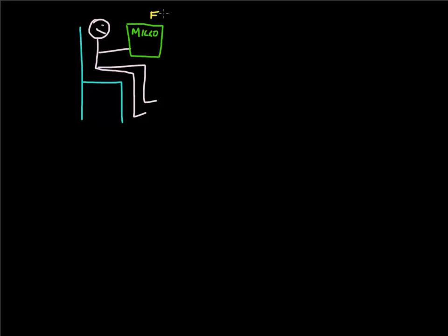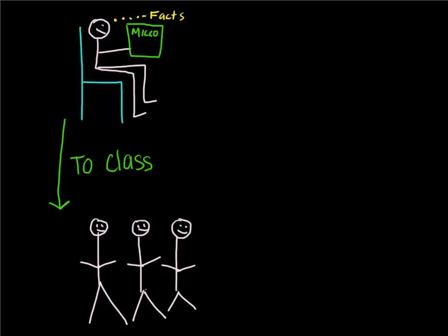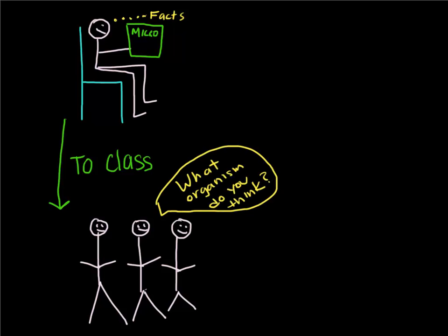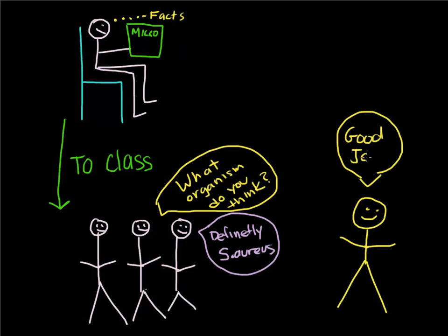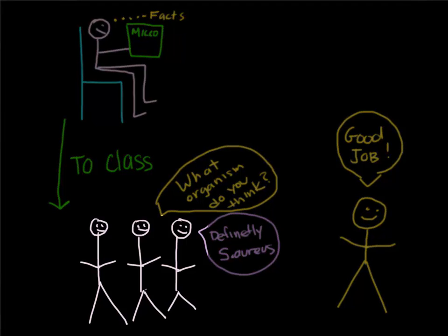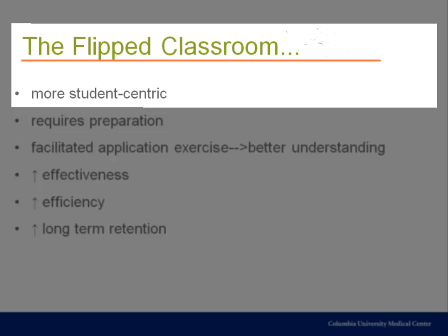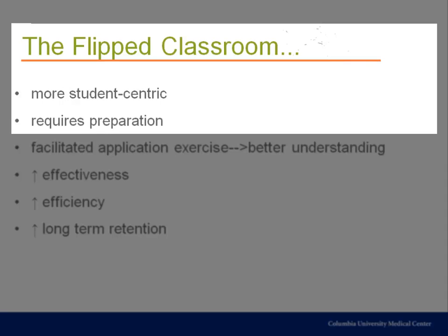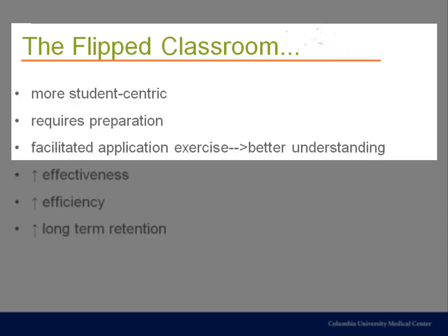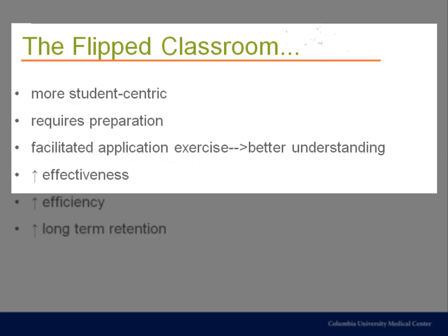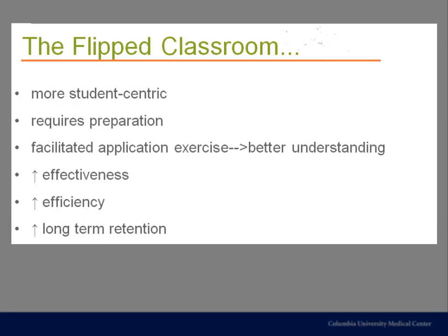The student first learns the facts at home, on his own time. He then goes to class prepared with knowledge. Usually in the flipped classroom, this knowledge is tested either prior to or at the start of class. The students then participate in an activity where they must apply and integrate the facts they've learned, usually led by an expert or facilitator. The flipped classroom approach is more student-centric and less instructor-centric. The student has more control over the pace and more responsibility for the learning process, and because the in-class application activity is led by an expert, there may be better understanding and assimilation of the material. I argue that the flipped classroom model has the potential to be more effective, more efficient, and result in better long-term retention.